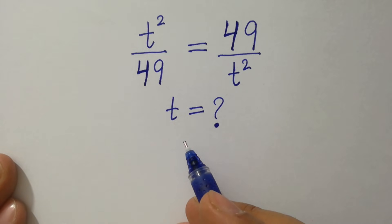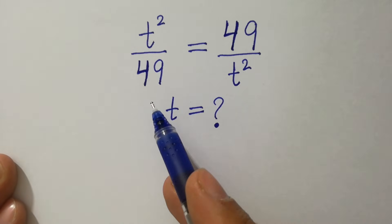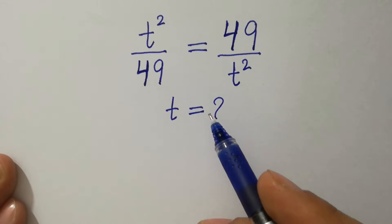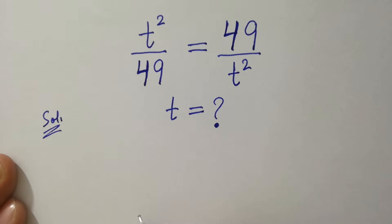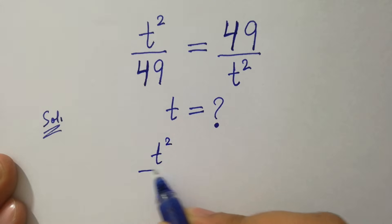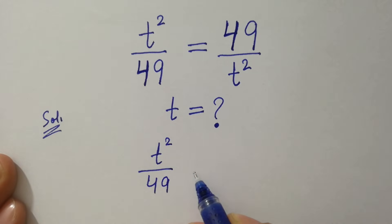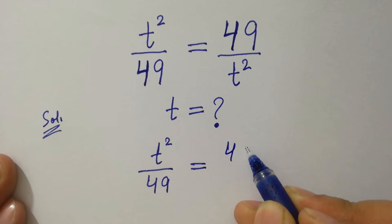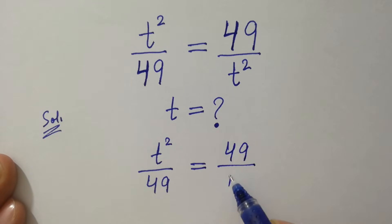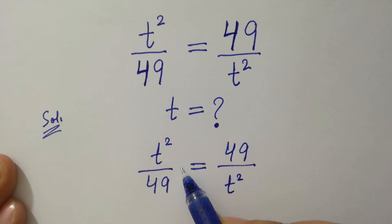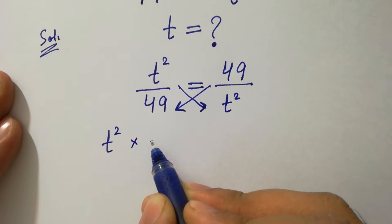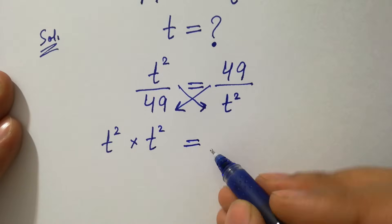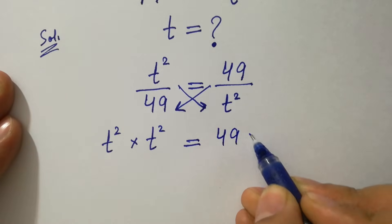Find the value of t if t² over 49 equals 49 over t². This can be solved by cross multiplication: we have t² times t² equal to 49 times 49.